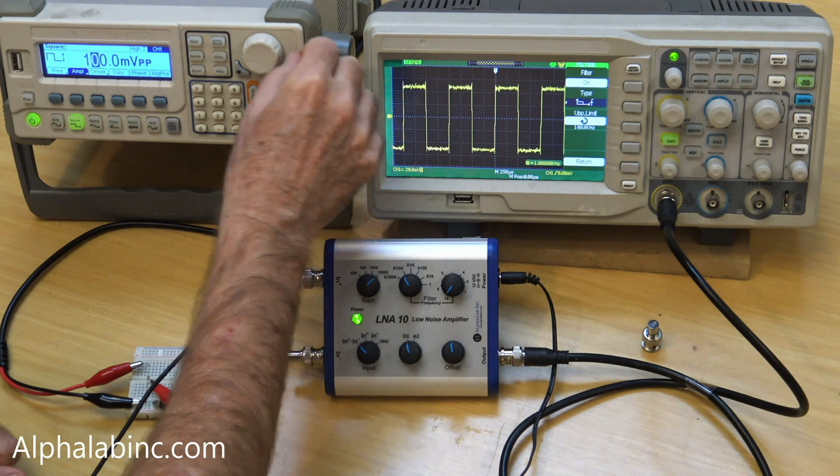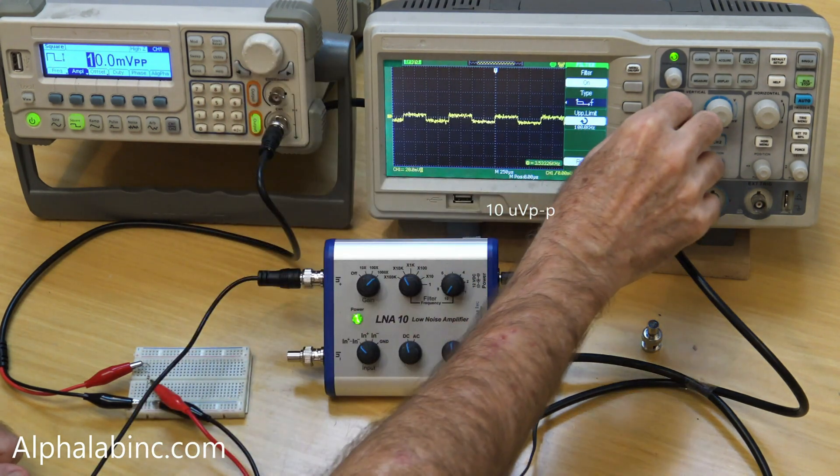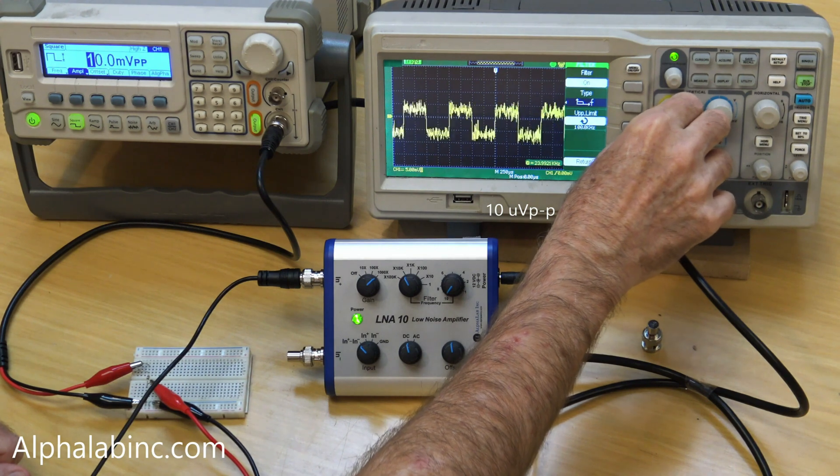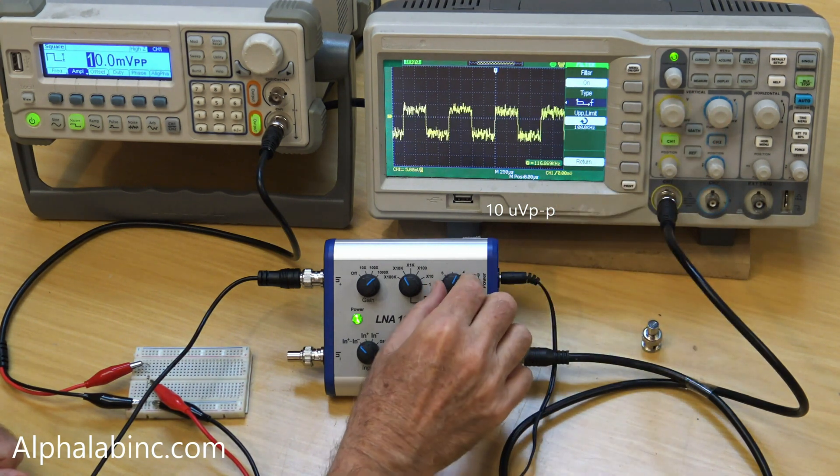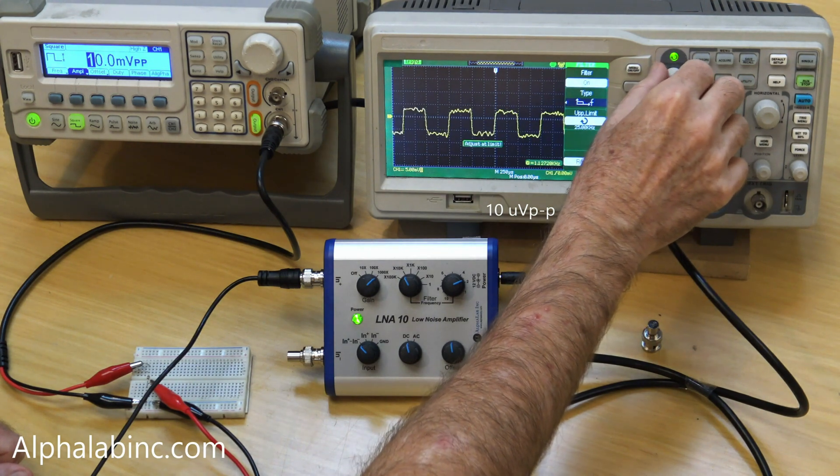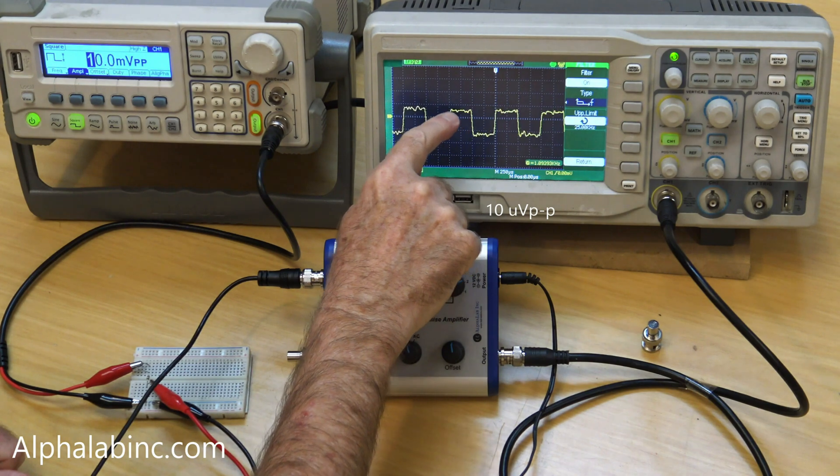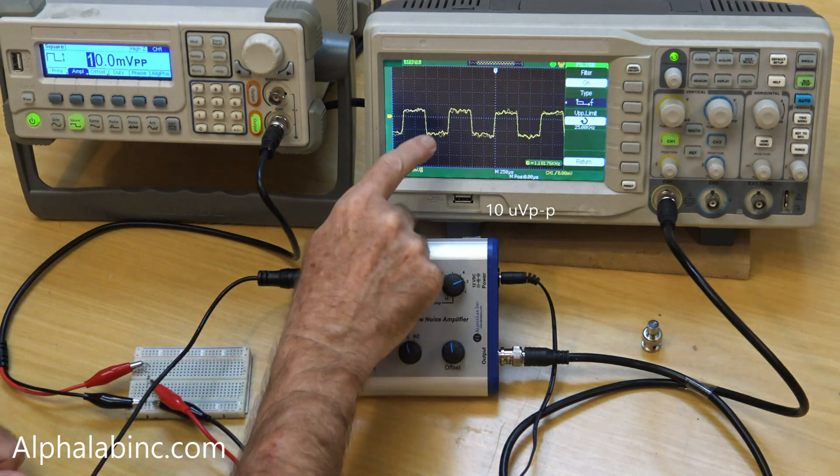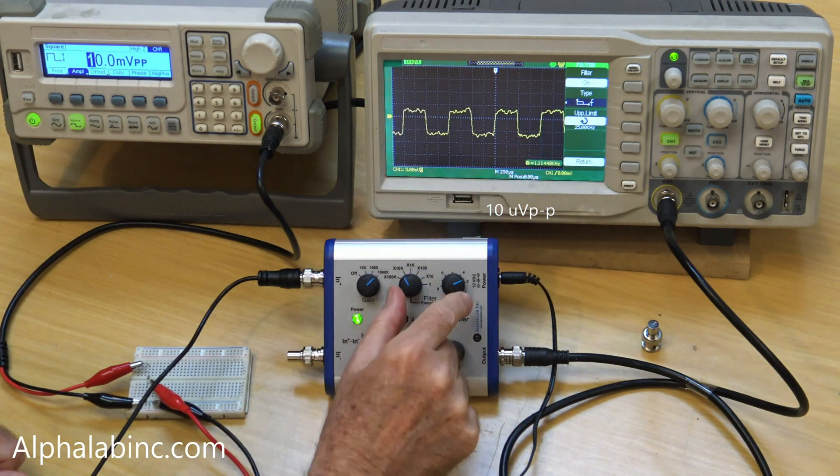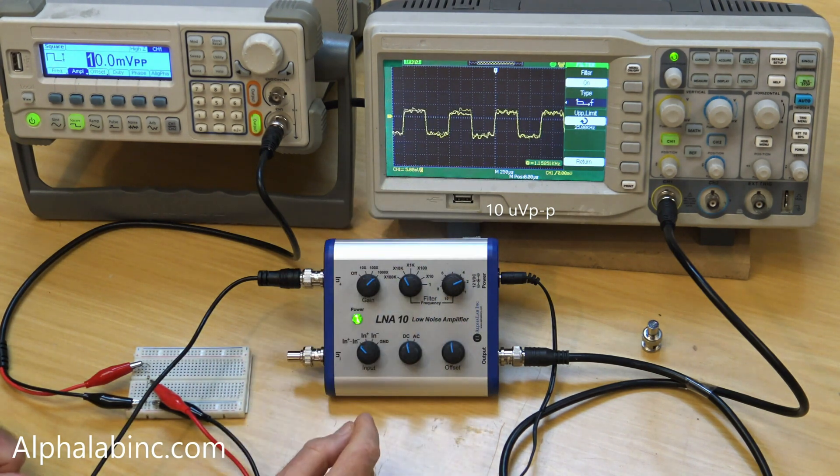Now I can even reduce the signal by another factor of 10 so that it's only 10 microvolts peak to peak that's going into the LNA10. I'll reduce the bandwidth further to 25 kilohertz on both the LNA10 and the oscilloscope. This shows the true thermal noise of the LNA10 at a 25 kilohertz bandwidth. Thermal RMS noise is less than a microvolt.